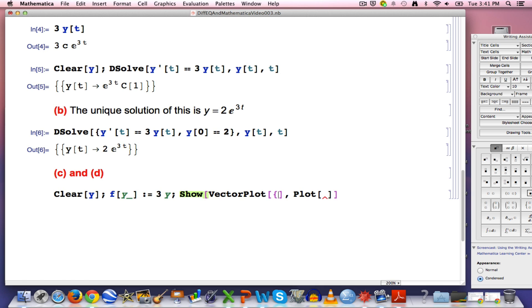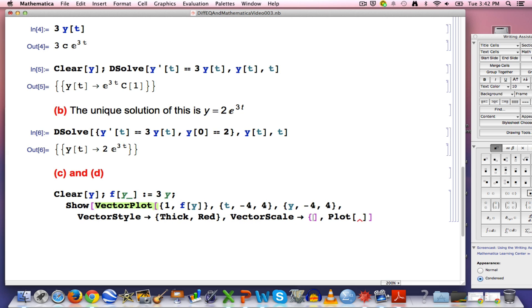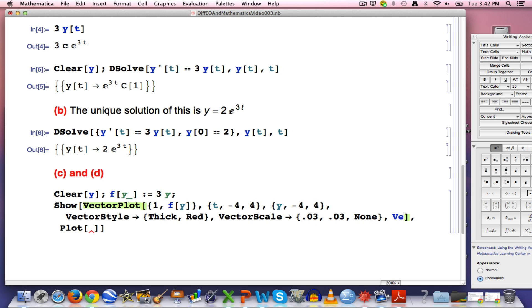To plot the vector of the slope field, you use a list with the first entry being a 1 and the second entry being the right hand side of the differential equation, f of y in this case. Let's let t go from negative 4 to 4. Let's let y go from negative 4 to 4 as well. Let's add some options in here like VectorStyle. Let's make it thick red. VectorScale, the option I always pick here is .03, .03, none. It makes the slope field look nice. That needs to be in a list. VectorPoints, you might want to add to graph more than a 15 by 15 grid. You might want to make this 25. Here we go, 25.